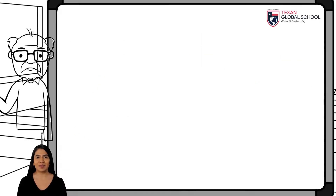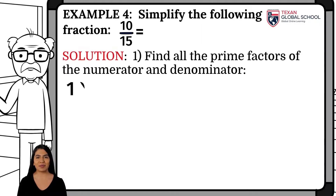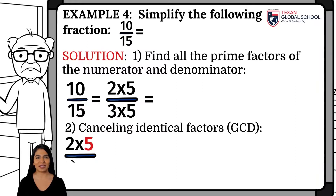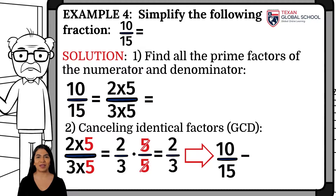In this example, we will simplify the fraction 10 over 15. First, we obtain the prime factors of the numerator and denominator. The prime factors of 10 are 2 and 5. The prime factors of 15 are 3 and 5. Then we cancel identical factors — in this case, 5. Since 5 is the greatest common divisor of 10 and 15, canceling it gives an equivalent simplified fraction. We conclude that 10 over 15 equals 2 thirds.